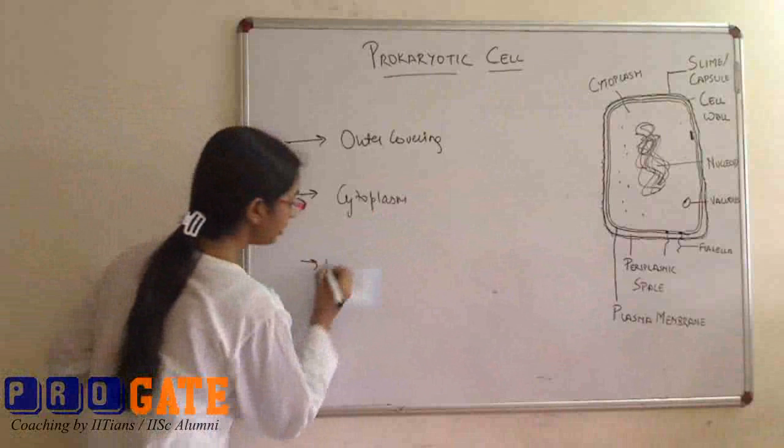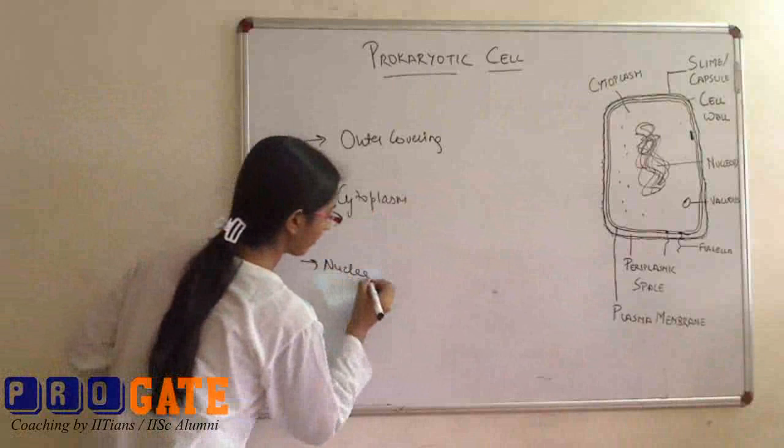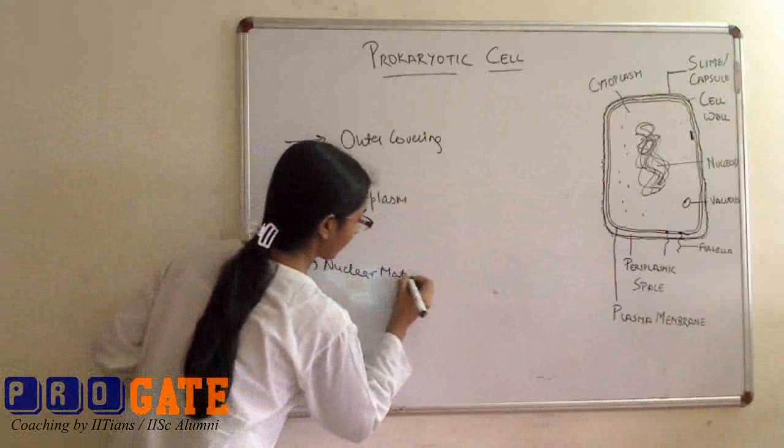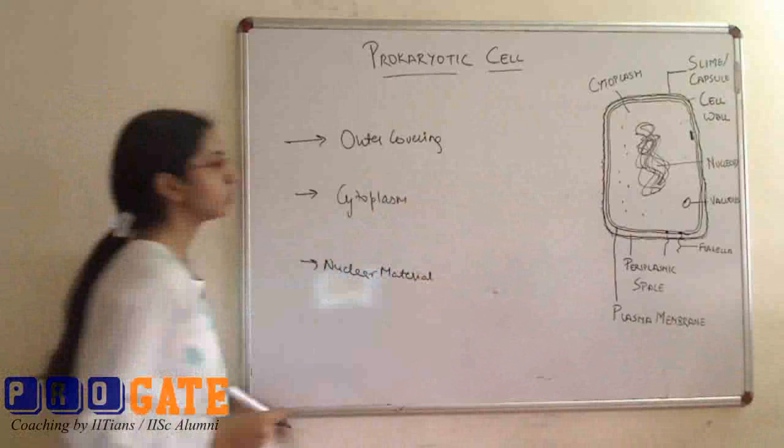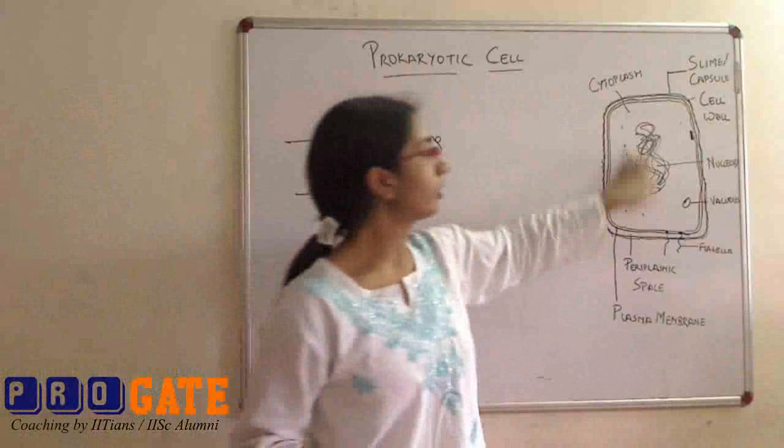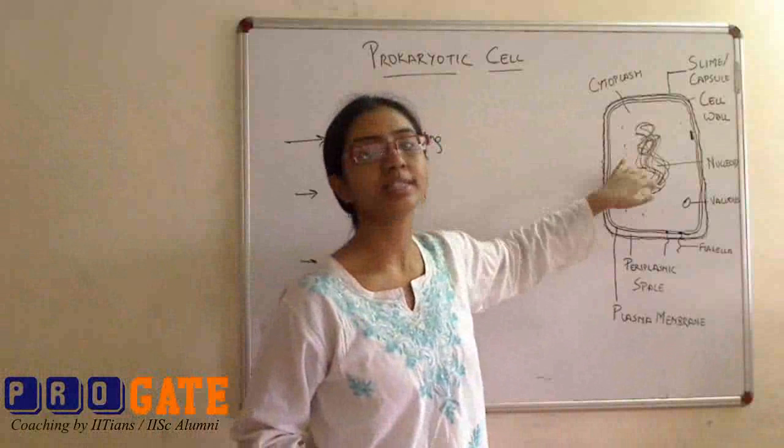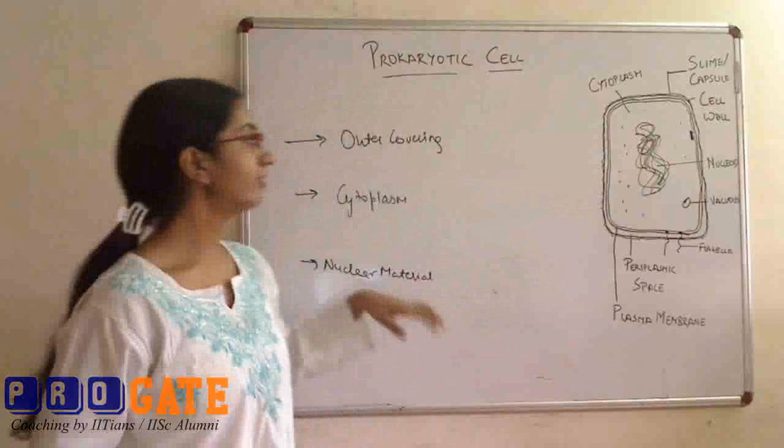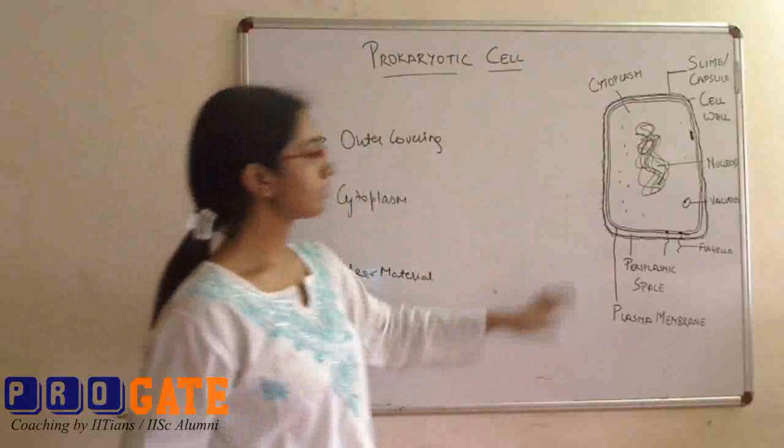And the third one would be the nuclear material. In this case, this is the prokaryotic cell and this nucleoid is the nuclear material that we have. I would name the basic parts of a prokaryotic cell.